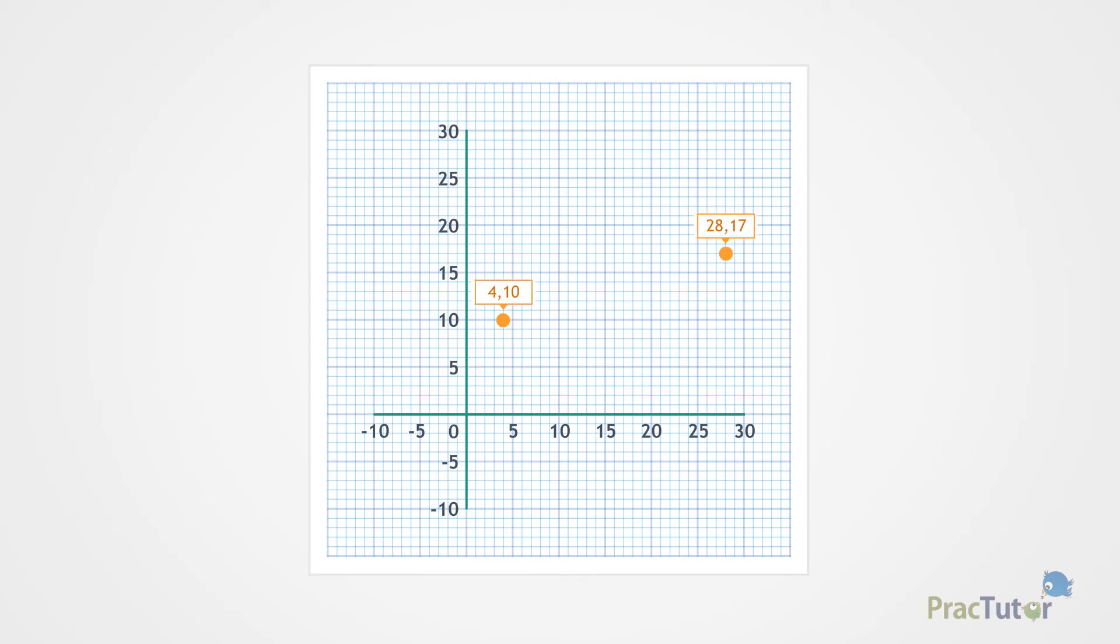Here's what the distance looks like when you draw a line between the points. You can turn this line into a right triangle by drawing a vertical line down from 28, 17 and a horizontal line across from 4, 10. Those lines meet at the point 28, 10.